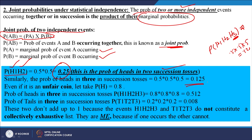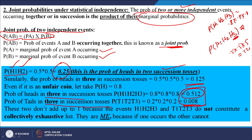Even for an unbiased coin, the probability of heads three times in succession would be 0.8 times 0.8 times 0.8. The probability of tails would be 0.2 cubed, which is 0.008. The sum of these two is not equal to 1, because they do not constitute a collectively exhaustive list — they are mutually exclusive events, meaning if one occurs the other cannot.